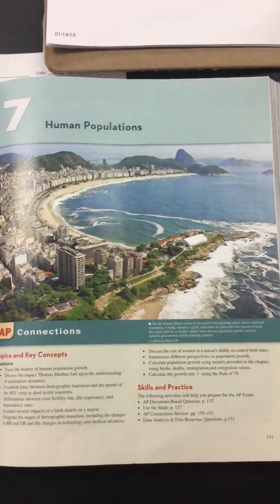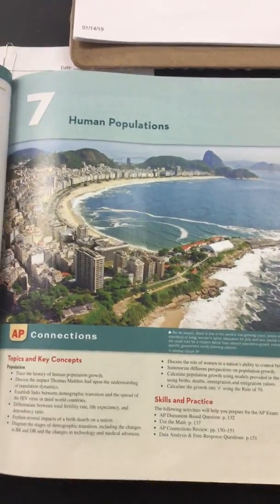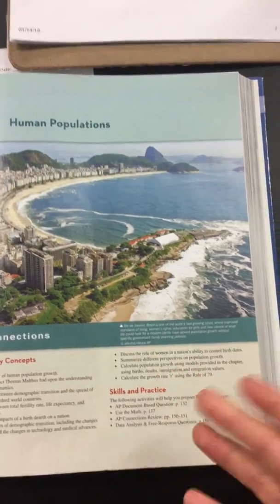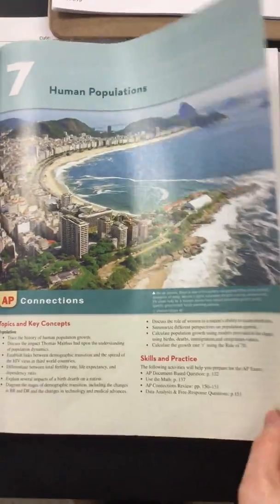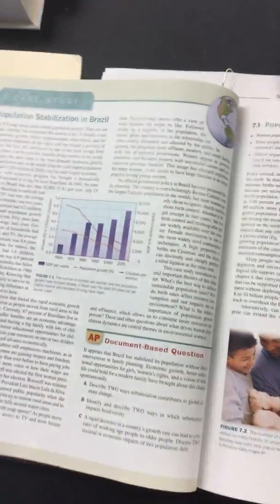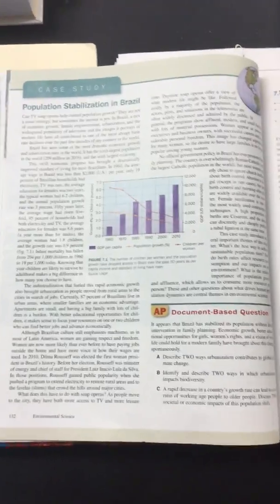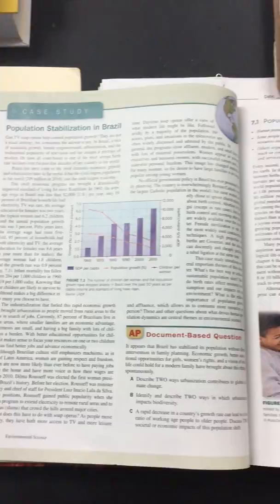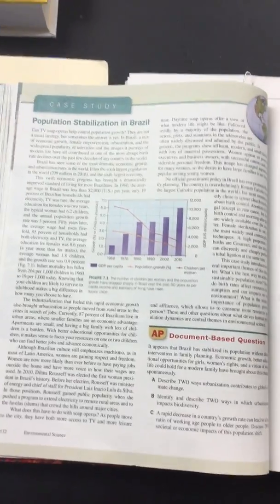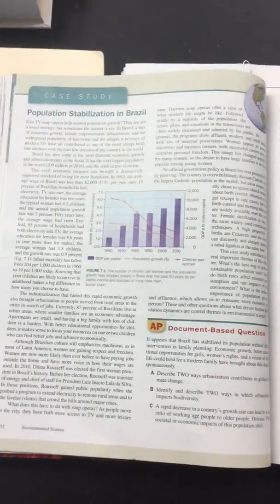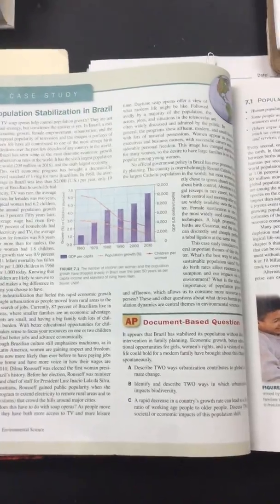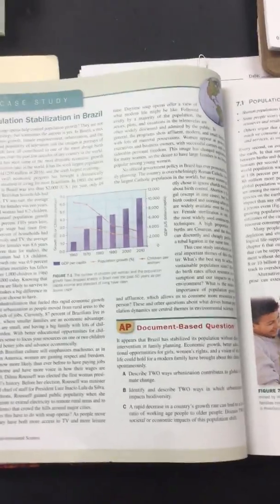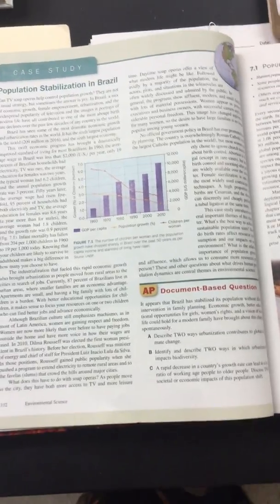So this chapter is human populations. This is Brazil. Look, don't you want to go visit? Maybe, maybe not. I've never been there. I would love to travel though. So the case study talks about population stabilization in Brazil. You can skip reading through this. We will probably come back to it this Friday. So Friday we're going to practice some FRQs. We'll look at the chapter six and chapter seven case studies. It'll help you review what's in both chapters as well. So that'll be a good chance for you to make sure you understand what's going on.